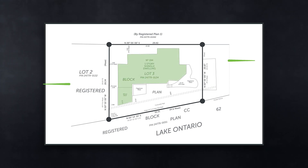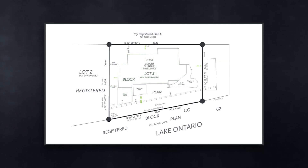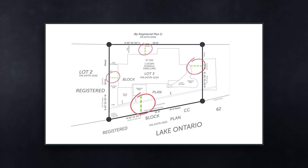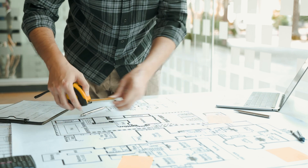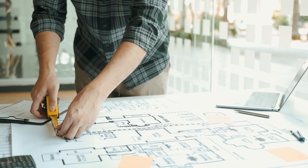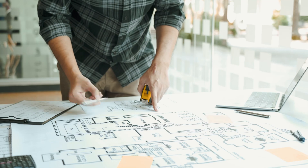Next, you will want to find the buildings and structures on your plan. Use these structures as a reference point when locating your boundaries. Lastly, you will want to find the setbacks — these are the measurements between structures on the property and the boundary lines. With these three things and a tape measure, you can get a rough estimate as to where your boundary lines are located.